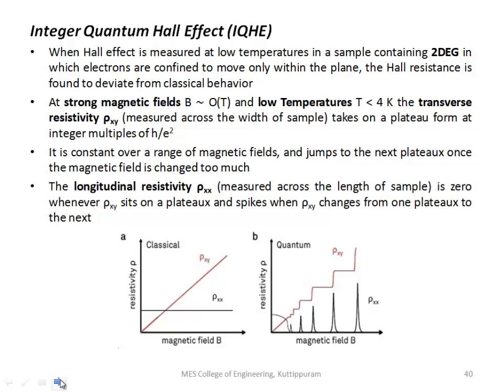So our first graph is the transverse resistivity, rho xy. It takes a plateau form at some multiples of h by e square. First plateau is 3h by e square, then 2h by e square, then h by e square. For one particular magnetic field, the plateau is constant. Then the magnetic field is increased, it jumps to another plateau.